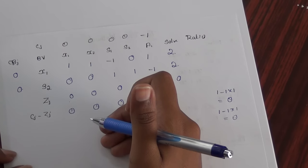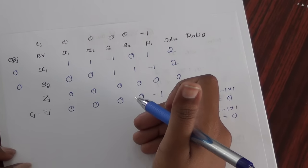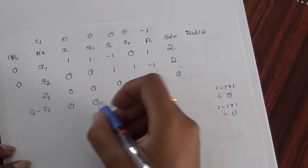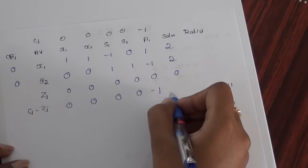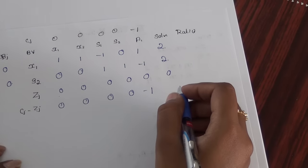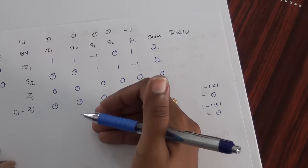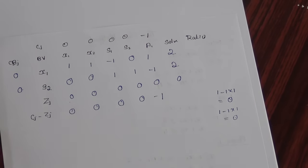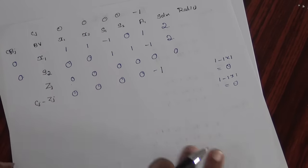I stop Phase 1 only when I have values less than or equal to 0. Here I have 0s and minus 1 — no positive values. So I stop Phase 1 here and proceed with Phase 2.